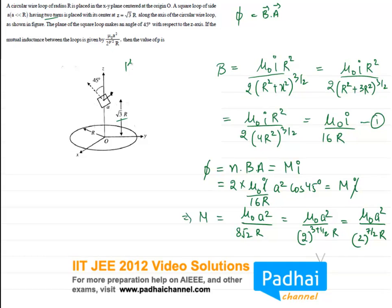So that means p will be equals to what? 7. So this was the answer. This was another easy problem if you know how to calculate mutual inductance.